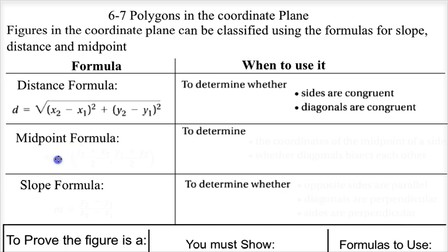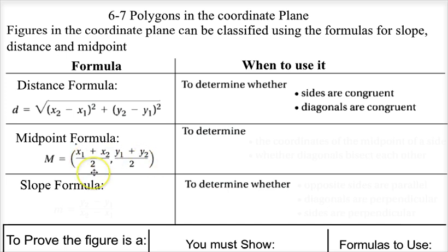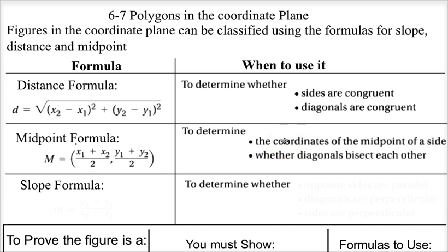The midpoint formula is (x1 plus x2) over 2, comma (y1 plus y2) over 2. So I'm adding the x coordinates and dividing by 2, and adding the y coordinates and dividing by 2. It's actually very useful because in a parallelogram the diagonals bisect each other. We can use the midpoint formula to find the coordinates of the midpoint of a side, or to see whether the diagonals bisect each other, which would prove it was a parallelogram.